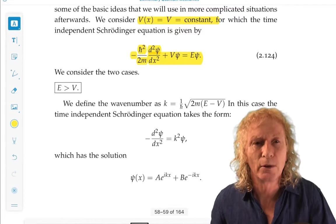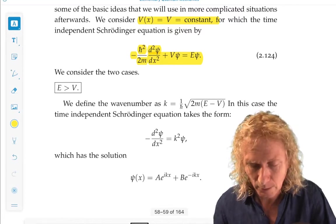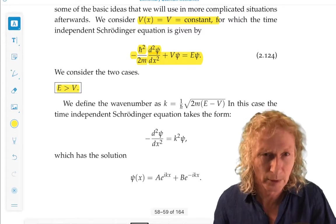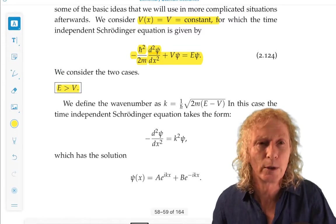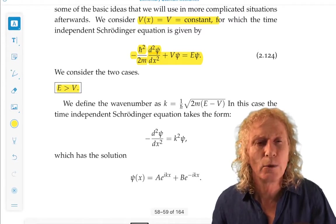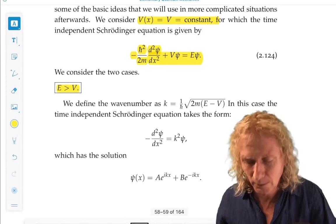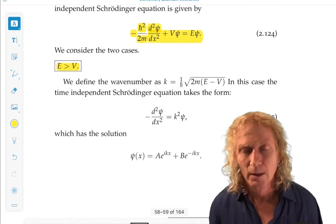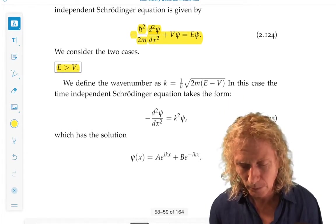The time independent Schrödinger equation is given by this expression. So we have two cases to consider: total energy larger than the potential, and total energy smaller than the potential energy. Of course, we could consider when E equals V, but we'll set that aside for the moment. That's a fairly easy case to consider.